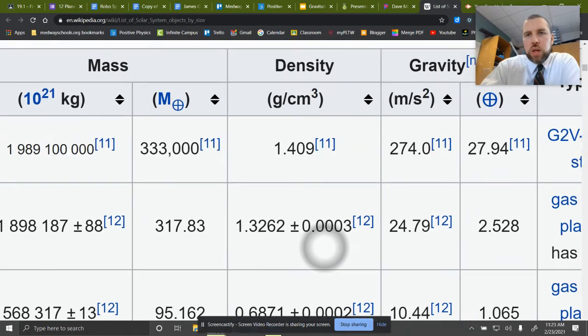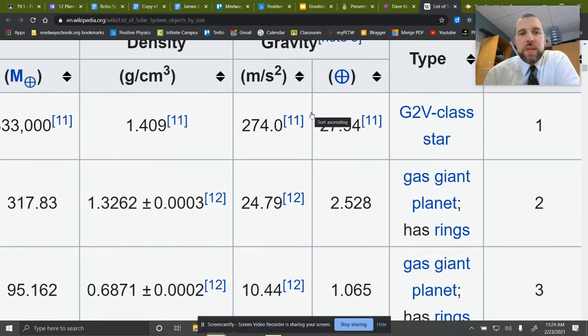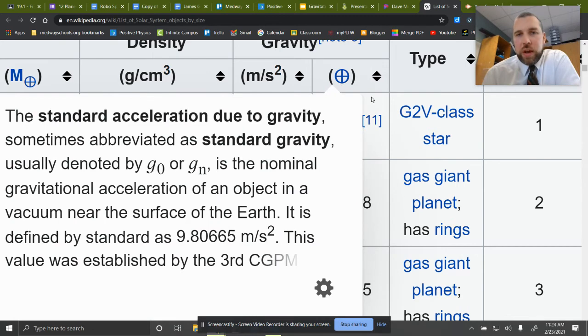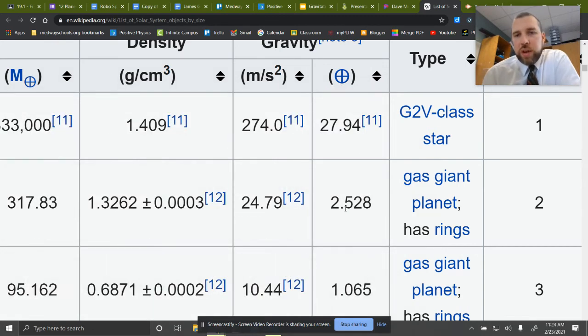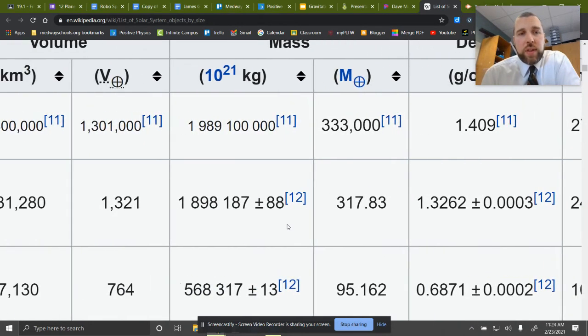And when we look at the actual gravity, this gravitational field strength, this is giving it in meters per second per second. So the acceleration due to gravity on that planet, which is another way to say gravitational field strength, and it, again, compared to Earth. So it'd be 2.528 times what it is on Earth, compared to this.